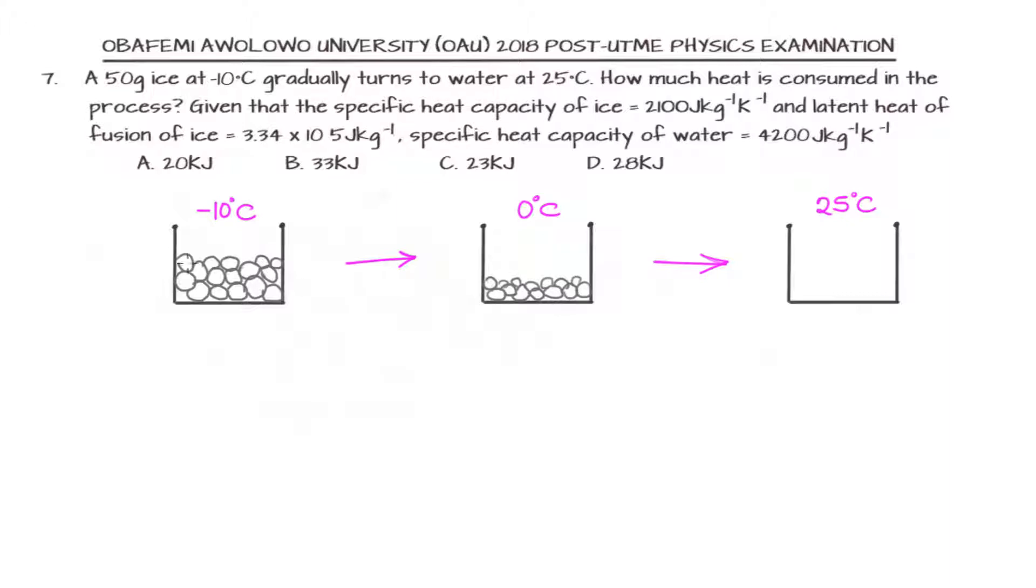If we heat from minus 10 degrees Celsius, it will take the ice down to 0 degrees Celsius. At 0 degrees Celsius, there is going to be a transition of the ice to water. The ice will be undergoing a process in which it will be turning into water, we have a mixture of ice and water. Then, after that is accomplished, the water will also be heated up to 25 degrees Celsius.